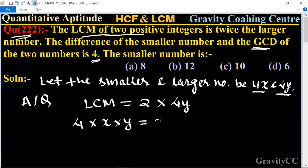So this is equal to 2 into 4y. So here 4, 4 cancel and y, y cancel, so x is equal to 2.